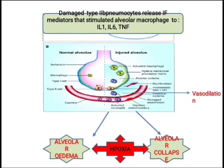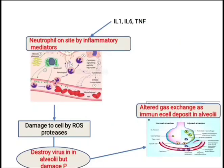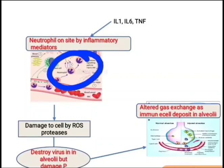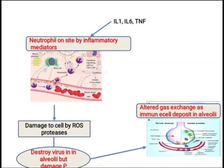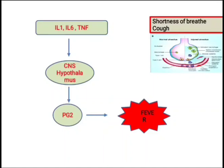Apart from this, IL-1, IL-6, and TNF continuously send signals, and neutrophils also reach the site of inflammation. Neutrophils are our immune cells which try to kill the virus by increasing reactive oxygen species and proteases. However, because of this the virus is destroyed but our alveolar pneumocytes are also damaged. All these immune complexes deposit in the alveoli, further altering gaseous exchange, further increasing alveolar edema and alveolar collapse.